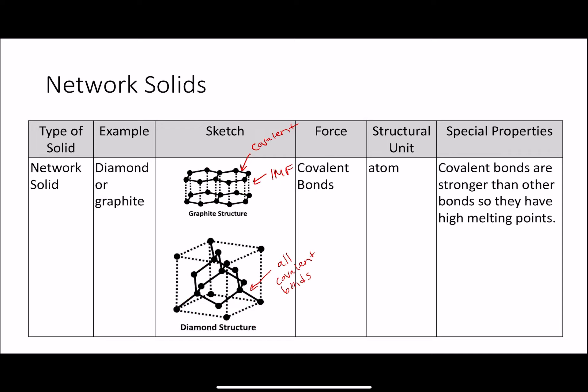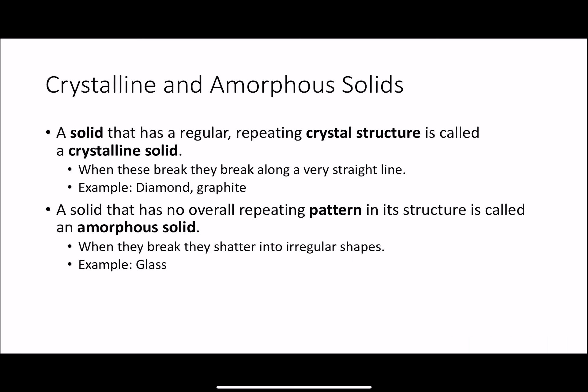The force holding it together is covalent bonds. The smallest structural unit is one atom. Since covalent bonds are stronger than other types of bonds, it means that network solids have very high melting points. So those are our four types of solids. Now I want to go through some other things you need to know.